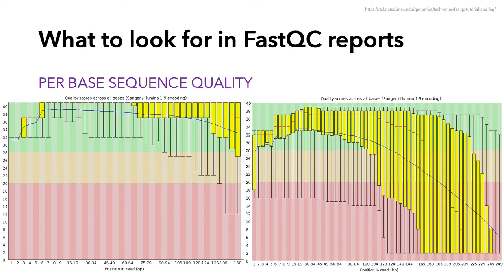The first FastQC module is per base sequence quality. This is one of the most basic but useful QC modules. In FastQC it's represented as box and whisker plots, and the blue line is the mean quality score. It's totally normal for Illumina data to start out lower, then increase, and then gradually drop over the length of the read. On the left we have an example of good data where all but the last few positions are entirely in the green. On the right, in contrast, is a plot from a bad sample where things drop off into the red pretty quickly.